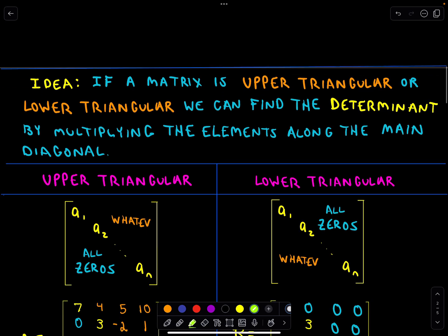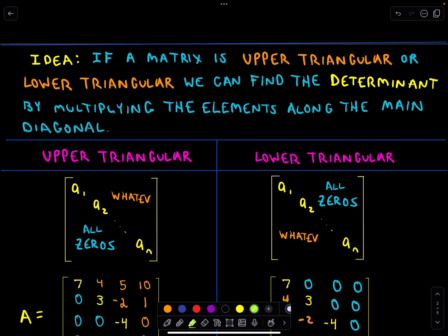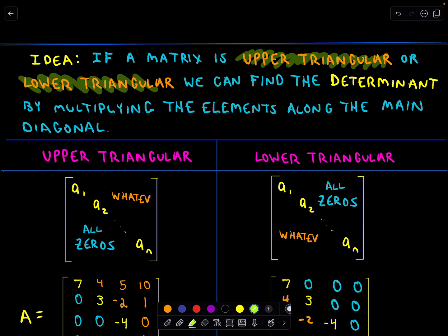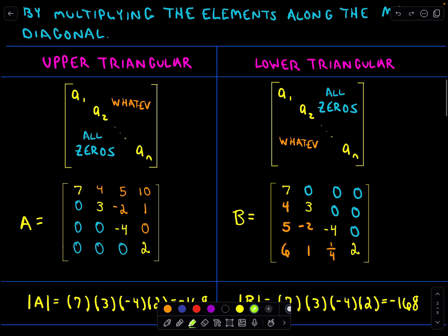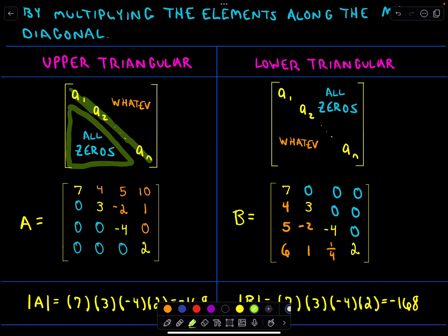Let's look at this a little more in depth. If a matrix is in either upper triangular form or lower triangular form, we can simply find the determinant by multiplying the elements along the main diagonal. So what do we mean by upper triangular or lower triangular? We just looked at an example of upper triangular. We look along the main diagonal — whatever's below that, we want to be all zeros.